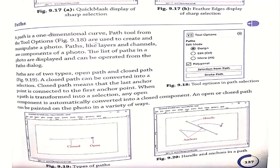Next is paths. A path is a one-dimensional curve. The path tool can be obtained from the tool options and is used to create and manipulate photo paths. Like layers and channels, paths are components of a photo. The list of paths in a photo are displayed in the paths dialogue. Paths are of two types: open path and closed path. A closed path means the last anchor point is connected to the first anchor point. When a path is transformed into a selection, any open component is automatically converted into a closed component.